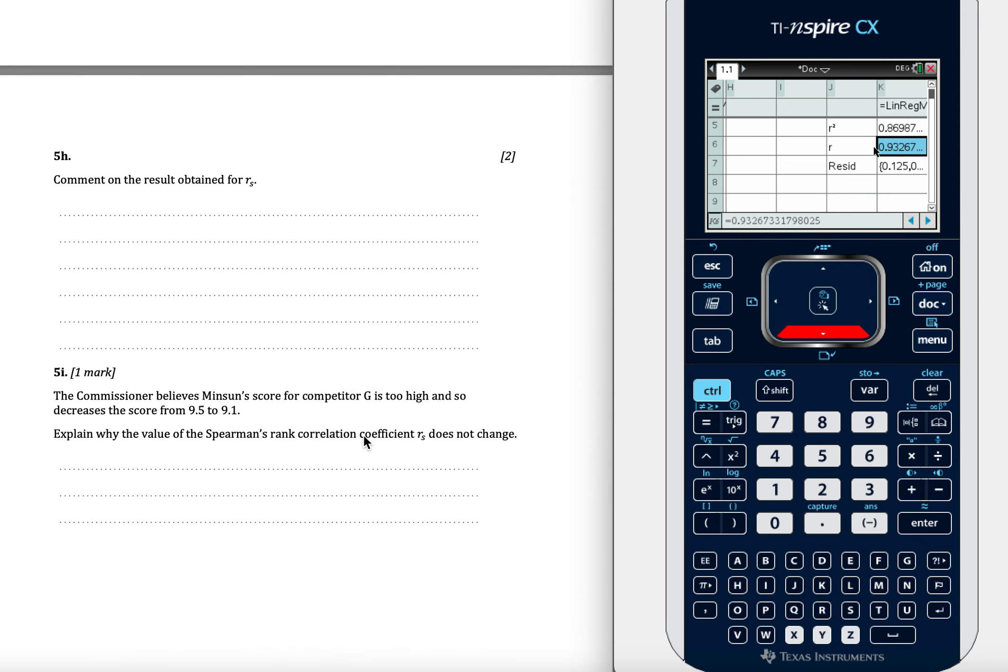Comment on the results. There's a strong positive, a strong, they strongly agree on the rank of the competitors. And we can even show you here. So in the last question, it says it changes from 9.5 to 9.1. So let's change that to 9.1. It's still going to have a rank of 1 because it's still the highest number, and it didn't change because I didn't change anything in my ranks.